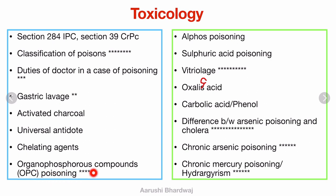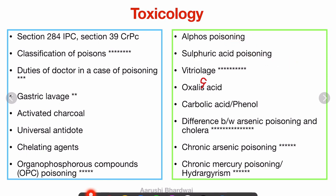Organophosphorus compound poisoning is a very important topic because it is very common in India — please don't miss it. Alphons poisoning is a read-through topic. Sulfuric acid poisoning is also a read-through topic, but vitriol large — oil of vitriol — is something very, very important. The topics marked with many stars are very frequently asked, so please don't miss them.